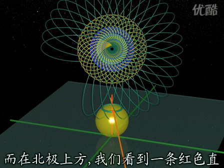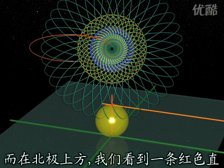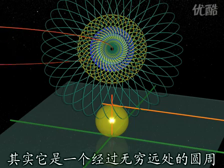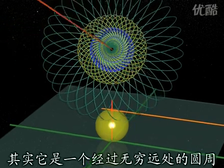And above the North Pole, one sees a straight line, actually a circle, going through infinity.